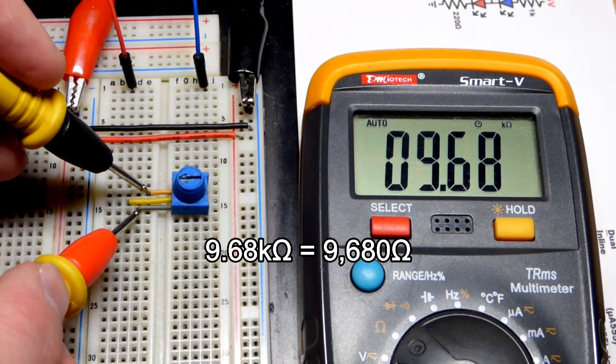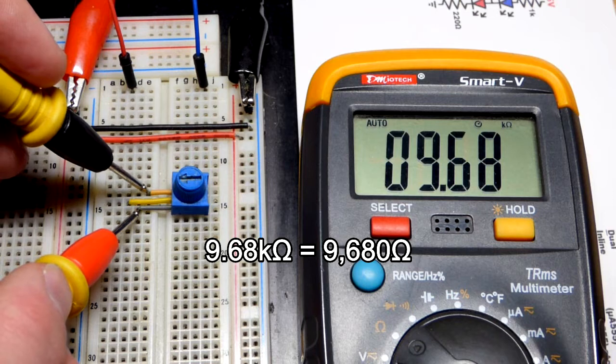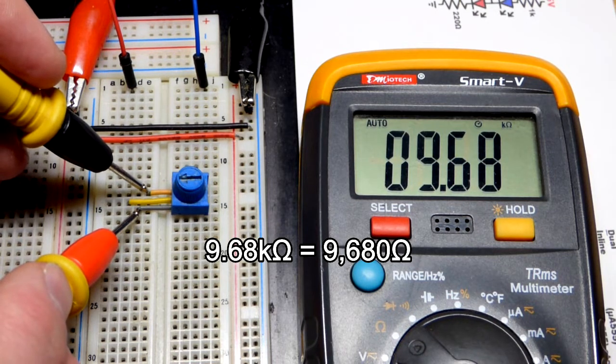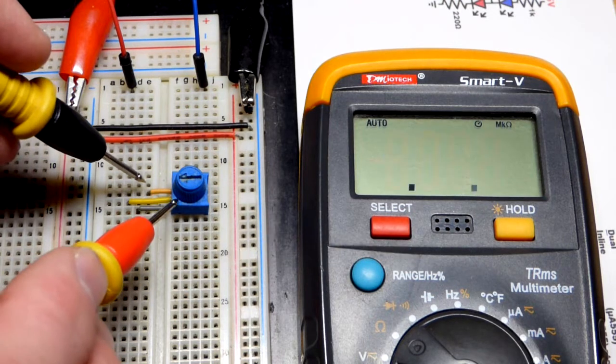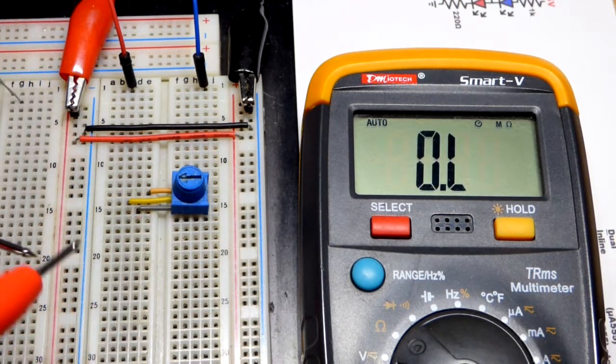As I said before, it was a 10,000 ohm trim pot. But you can see it looks like it's fallen a little shy of that. They don't have to be exact. They can be a little bit higher or lower. That is to be expected.